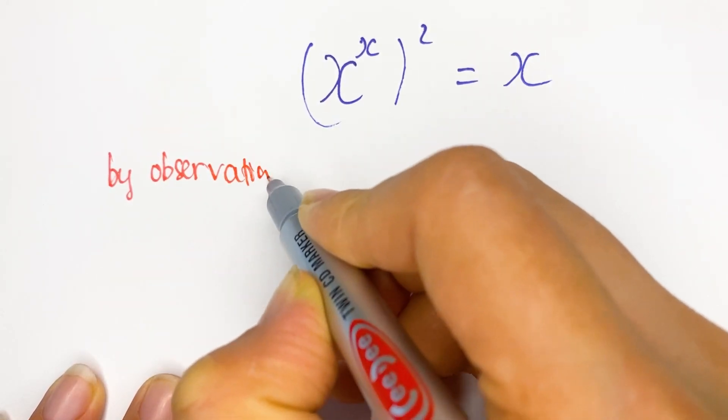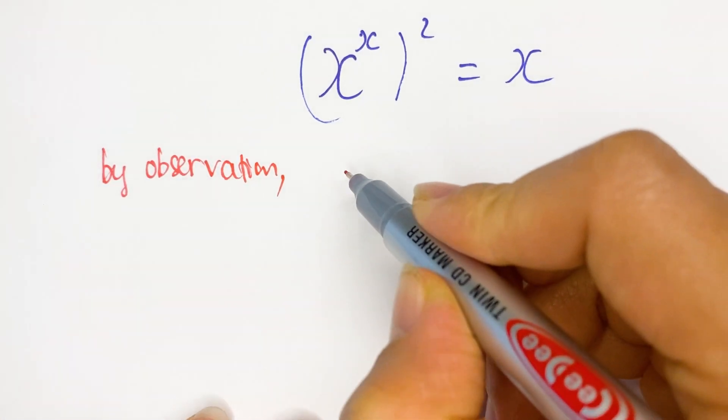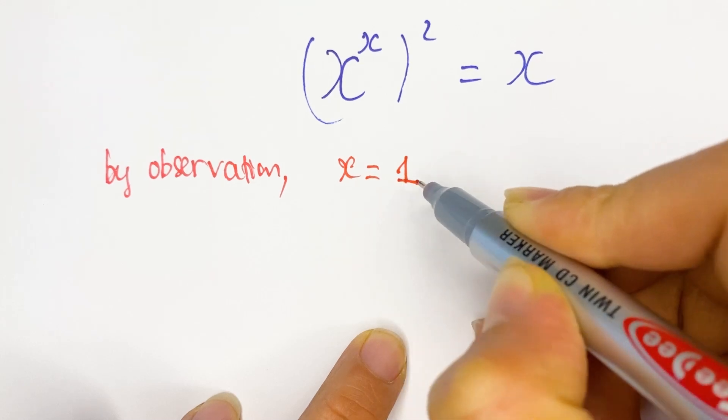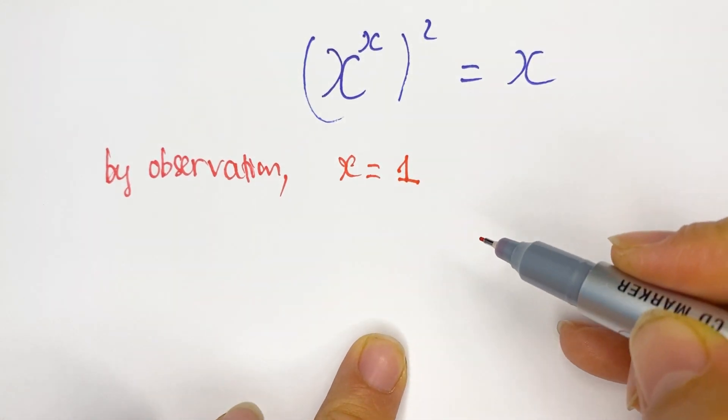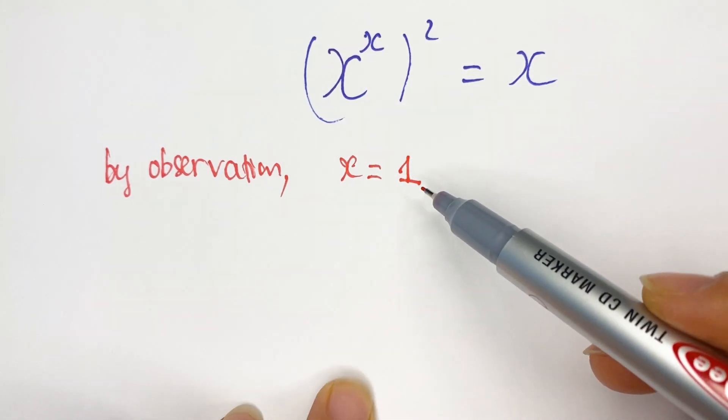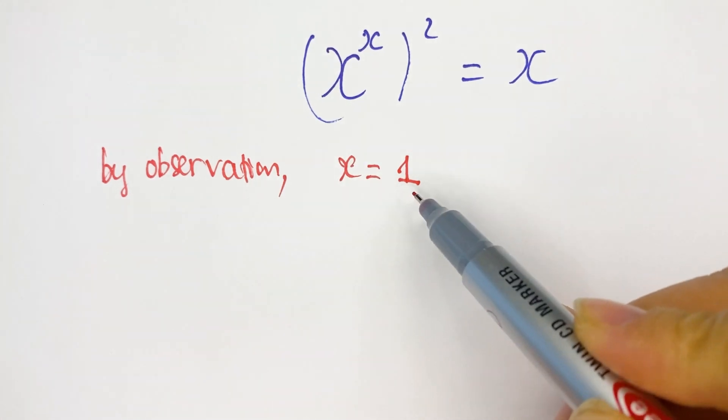By observation, we can get a solution to this equation as x equal to 1, because 1 raised to any power written, 1 itself. So first, we have the value of x equal to 1.